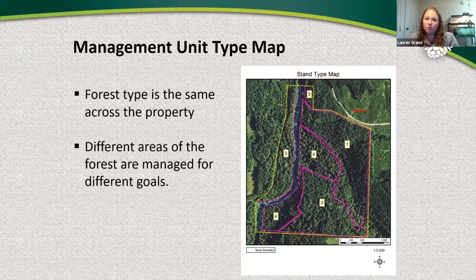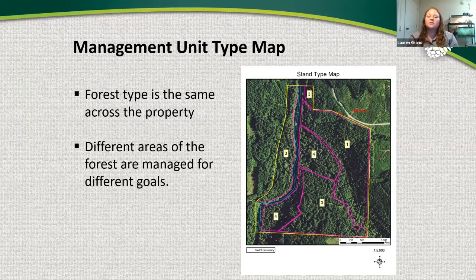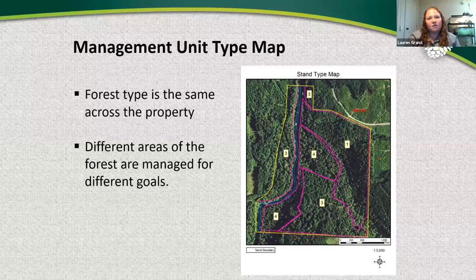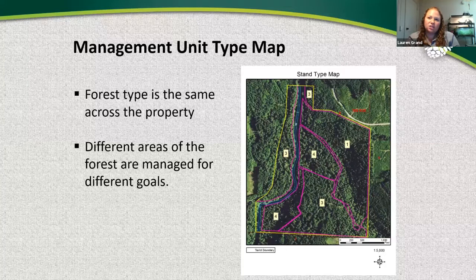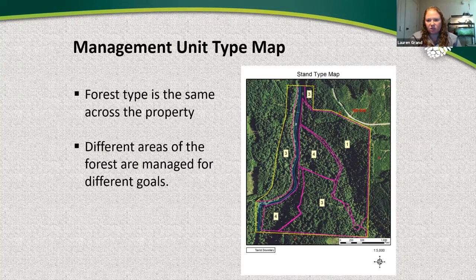If your whole forest looks exactly the same, that's no problem — you can have just one stand. This is also a great opportunity to break up your property based on management goals: maybe one area for wildlife habitat restoration and another for generating income. Each management unit will have a sub-plan, giving you more information. On a stand map where forest vegetation looks similar, you can still have different management objectives for stand one versus stand three.